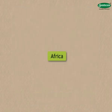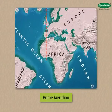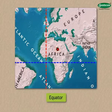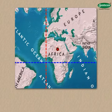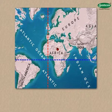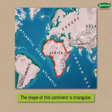The prime meridian as well as the equator passes through the continent of Africa. Hence, this continent stretches in all the four hemispheres. The shape of this continent is triangular.